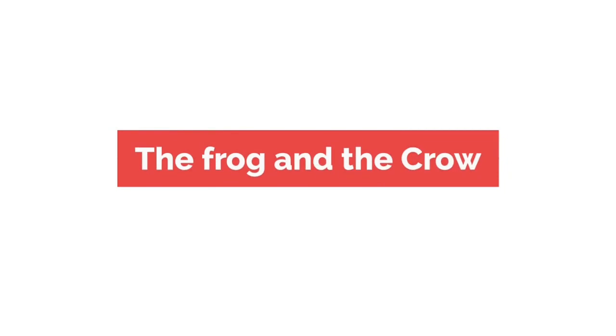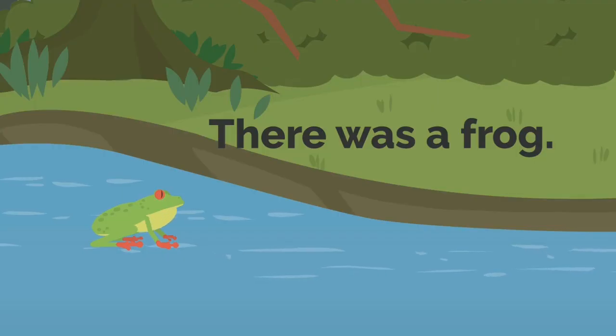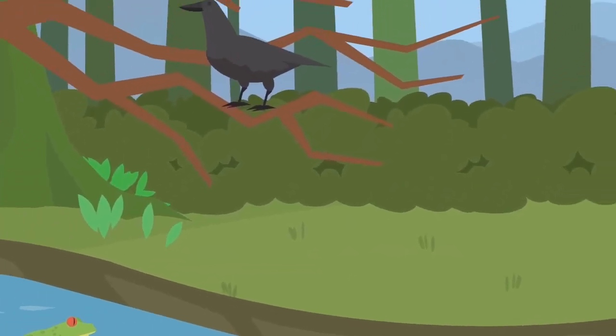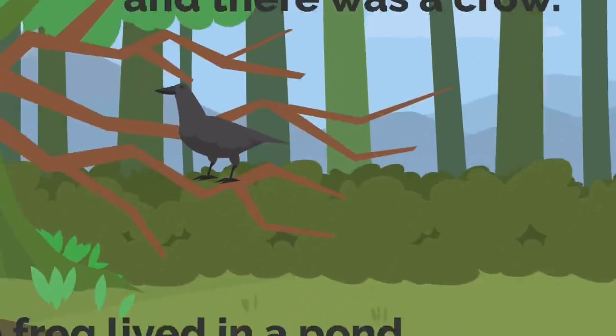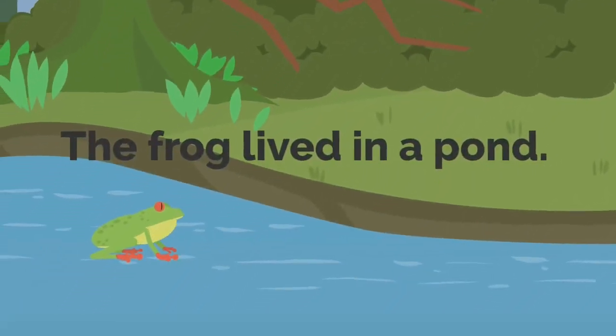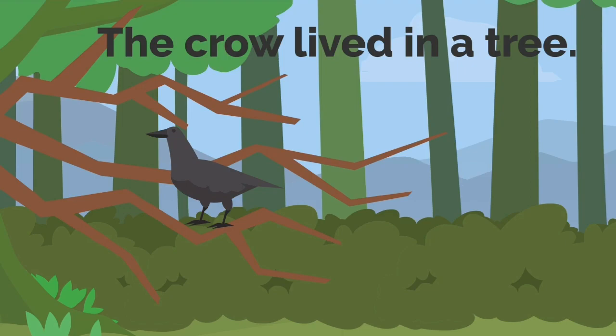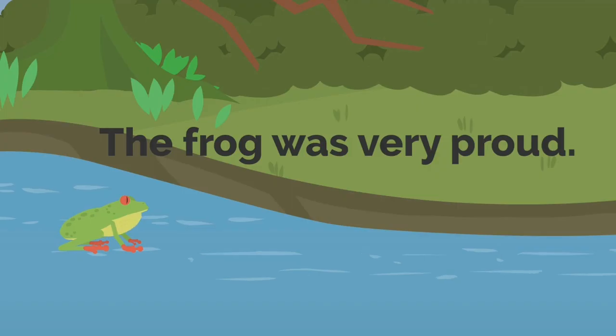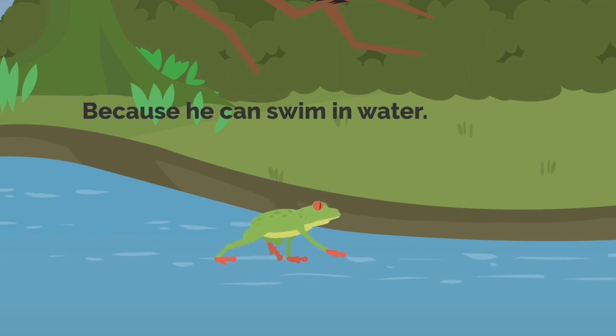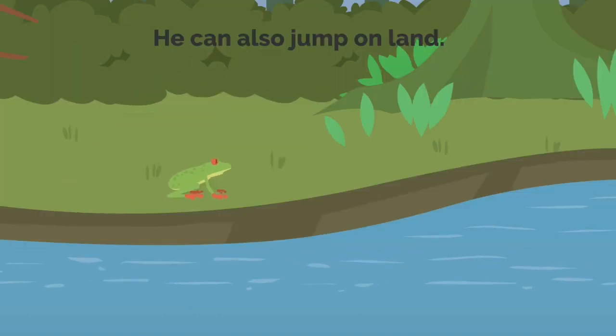The Frog and the Crow. There was a frog and there was a crow. The frog lived in a pond, the crow lived in a tree. The frog was very proud because he could swim in water.